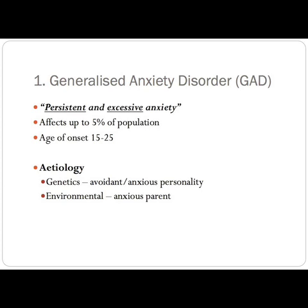So let's start with generalised anxiety disorder. Generalised anxiety disorder describes a persistent and excessive anxiety that importantly is out of place with the patient's situation. It affects twice as many women as men, and it is estimated to affect up to 5% of the population. The most common age of onset is usually between 15 and 25 years of age.